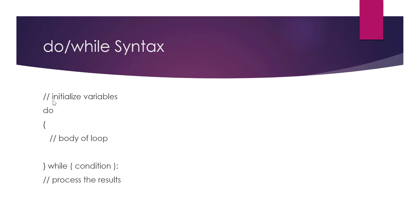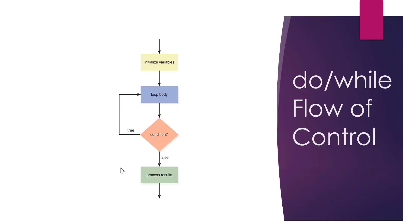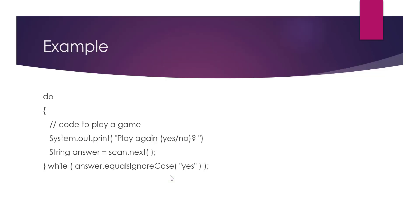Reviewing the do-while syntax: we initialize variables — in our example the integer a. We execute the loop body at least once, reading the first input. If the input is correct, between 1 and 10, the loop body executes only once and we process the results. If the number is out of range we ask again. An important detail: in the do-while syntax you must put a semicolon after the while condition, unlike the regular while loop which has no semicolon there.